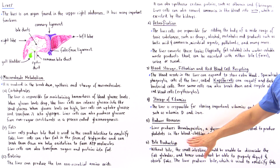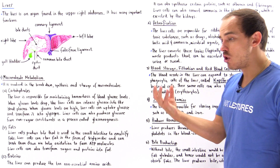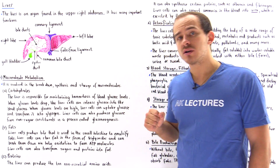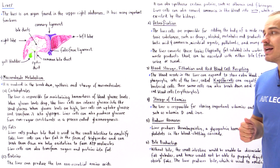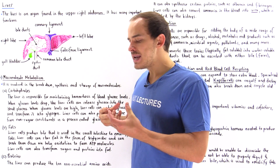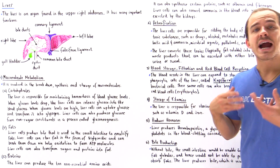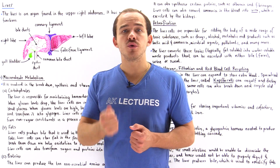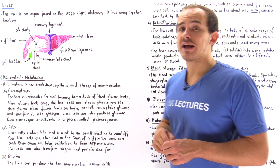Bile emulsifies our fat globules — it breaks them down into smaller particles so that enzymes can act on those particles and break down the fats, which are then absorbed by the cells of the small intestine. Those absorbed fats eventually enter our blood system, where liver cells absorb the fatty acids and store them in the form of triglycerides.